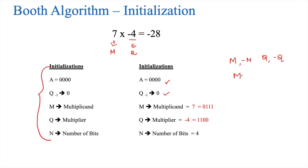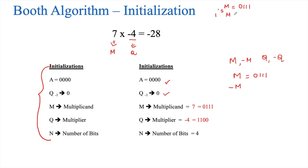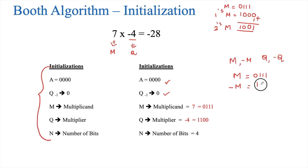First, we write M. Since M is an unsigned number, M is the multiplicand equal to 0111. We then find minus M by calculating the 2's complement of M. Starting with M = 0111, the 1's complement is 1000. Adding 1 gives 1001. This is the 2's complement of M, which equals minus M = 1001.